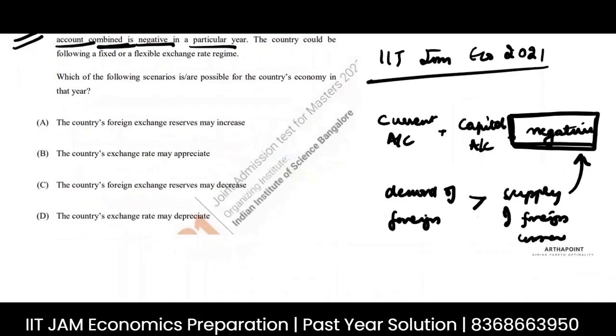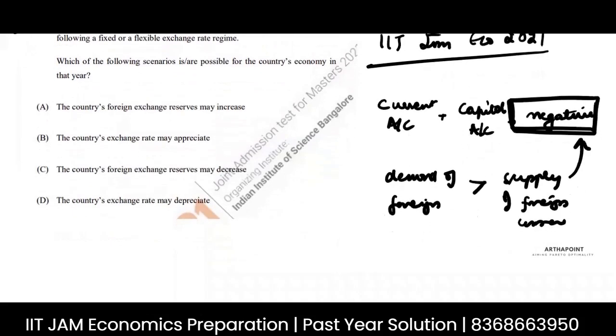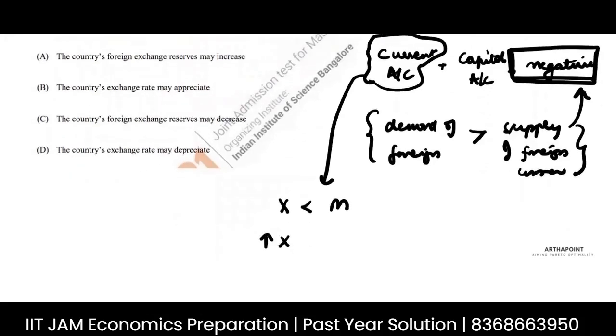You're demanding a lot of foreign currency, which means the only way in which you can reverse this is either try and do something with the deficit in the current account. When is current account in deficit? When the exports are less and imports are more. You want to increase your exports. How can you increase your exports? By depreciating your currency.